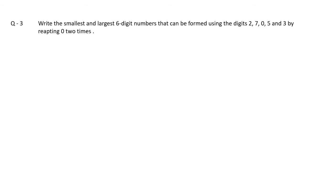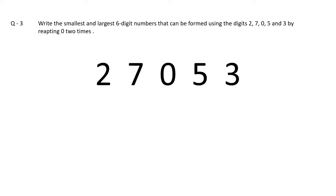Question number three is saying: write the smallest and largest six-digit numbers that can be formed using the digits 2, 7, 0, 5, and 3, by repeating zero two times. We have to make a six-digit largest and smallest number, and the digits given are 2, 7, 0, 5, and 3, with the condition that zero must be repeated two times. That is why only five digits are given, so we repeat zero two times to make a six-digit number.